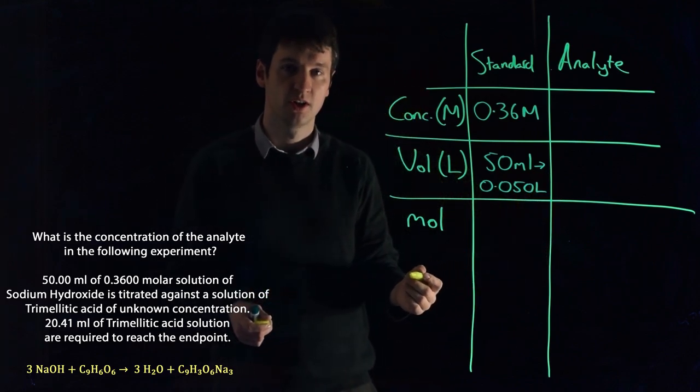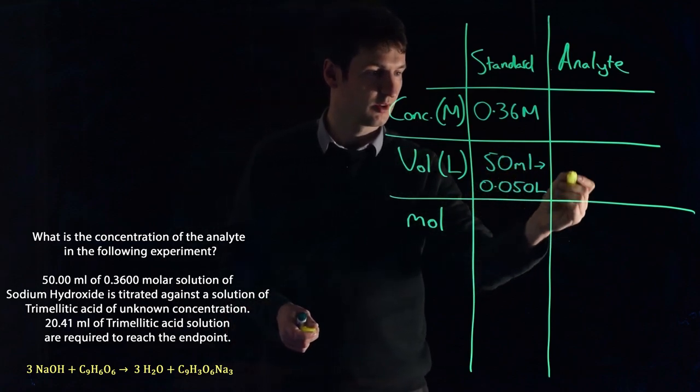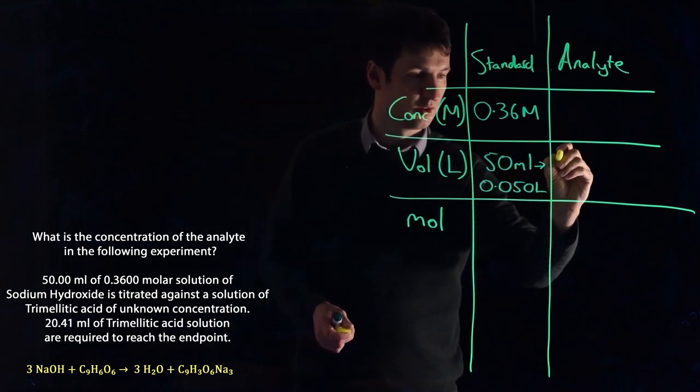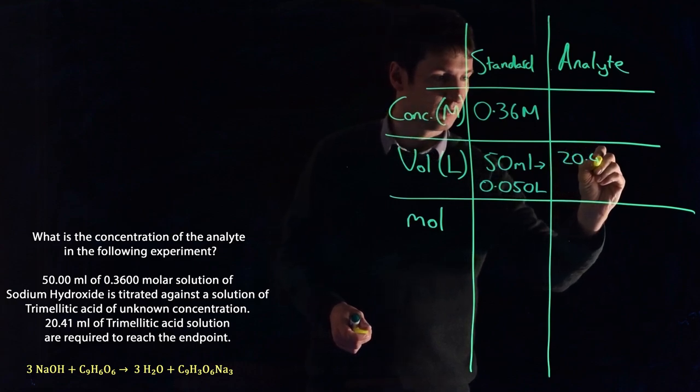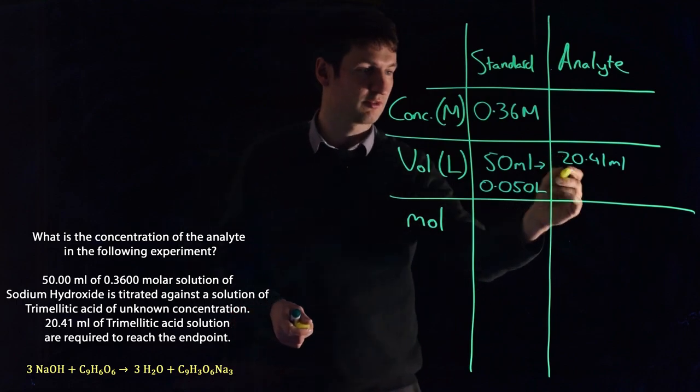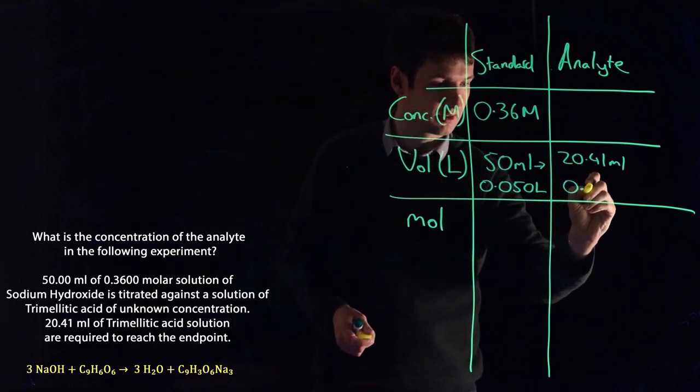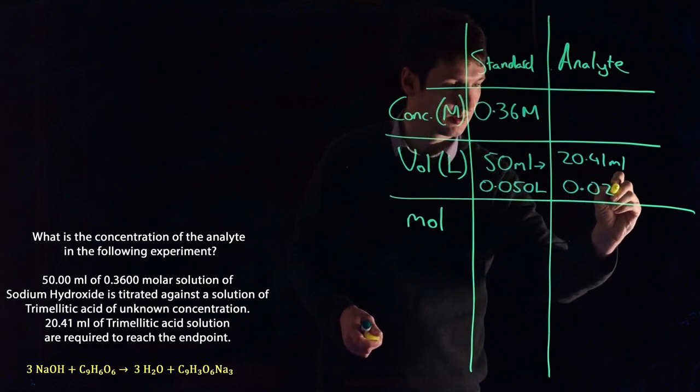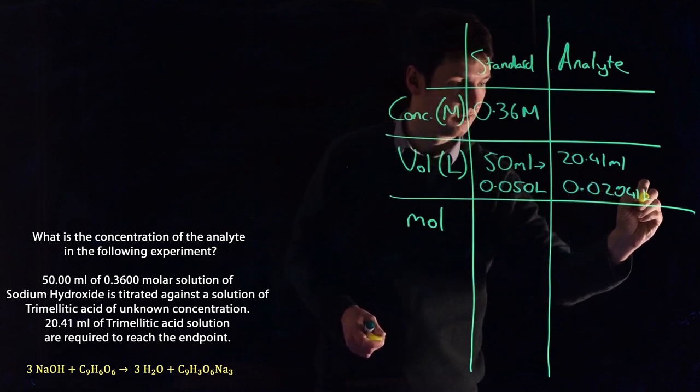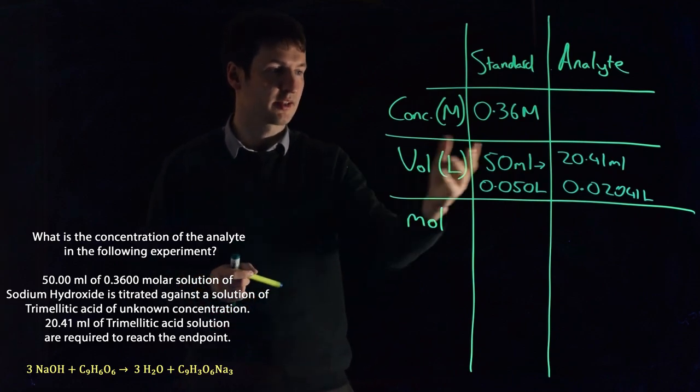What else are we told in the question? We're also told that it required 20.41 milliliters of our trimellitic acid solution to react to get to the end point, which is 0.02041 liters. So now we have all we know set into the grid.